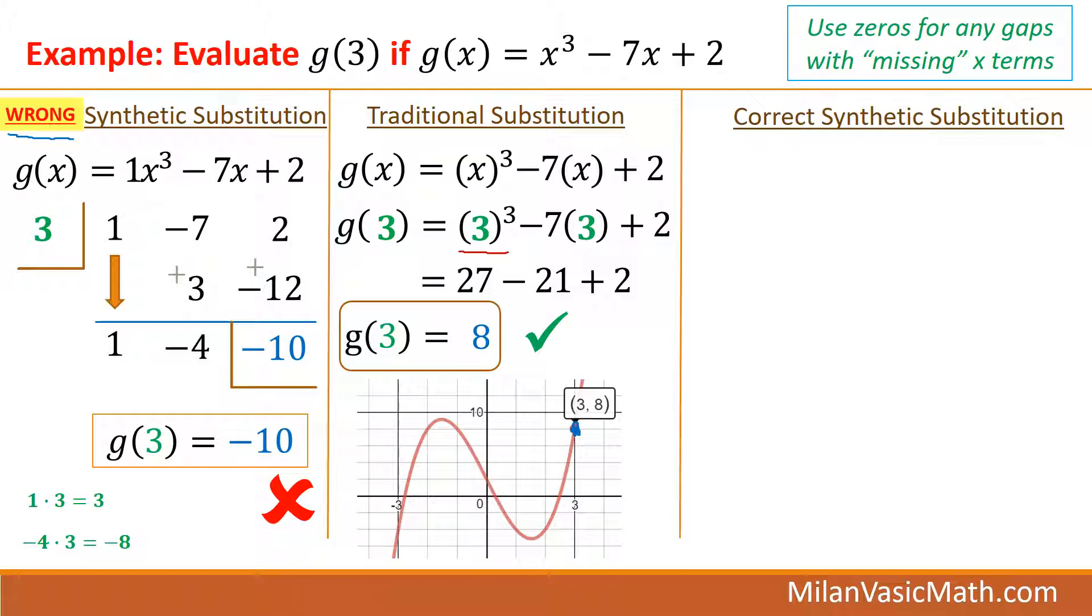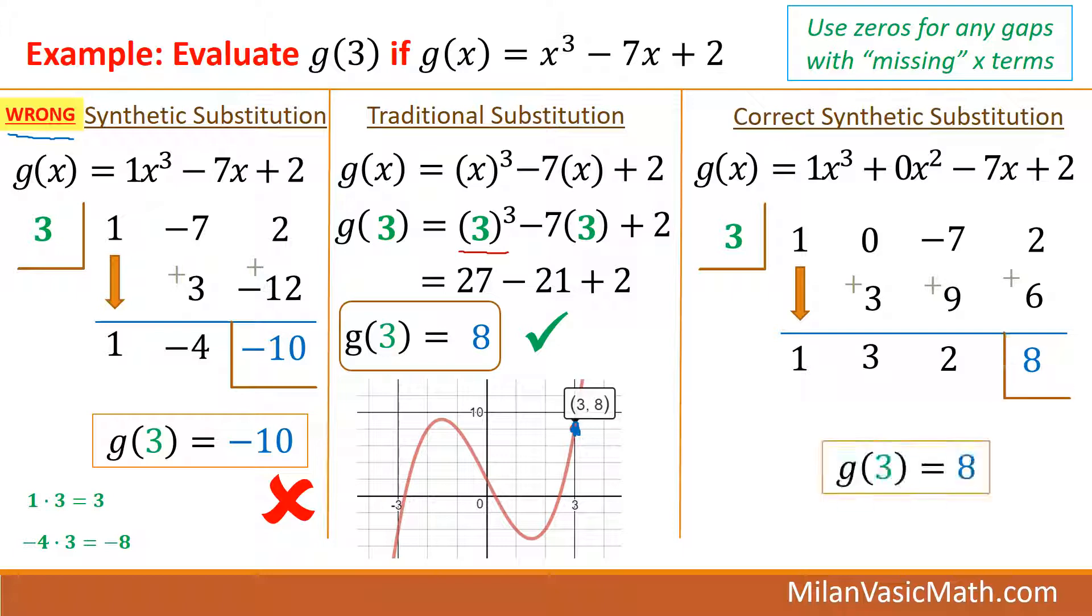The correct synthetic substitution, you have to make sure you use zeros for any gaps with missing x terms. So notice there was no x squared term. So I'm going to put a placeholder there, 0. And go ahead and try to use synthetic again. Bring down the 1. 1 times 3 is 3. Add them together. 3 times 3 is 9. Add those numbers together. And 3 times 2 is 6. 2 plus 6 is 8. And there's the number we wanted. So g of 3 is 8. I know that is correct. So to summarize, make sure if there are any terms that are missing, use 0 as a placeholder.